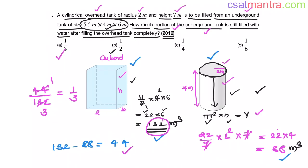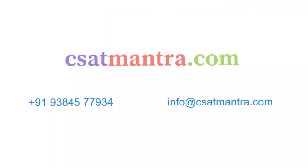Questions from geometry and mensuration will be very easy — there won't be any confusion. Knowing the volumes and surface areas of basic shapes will be enough: squares, rectangles, cubes, cuboids, and cylinders — these 5 shapes, not more than that. To know more about the course, kindly visit csatmantra.com. If you have any queries, feel free to call us or mail us.